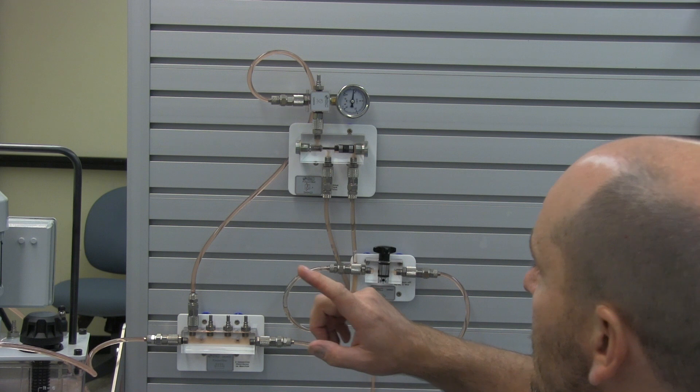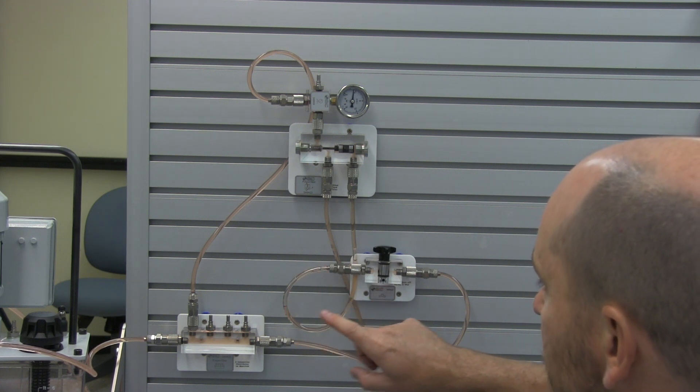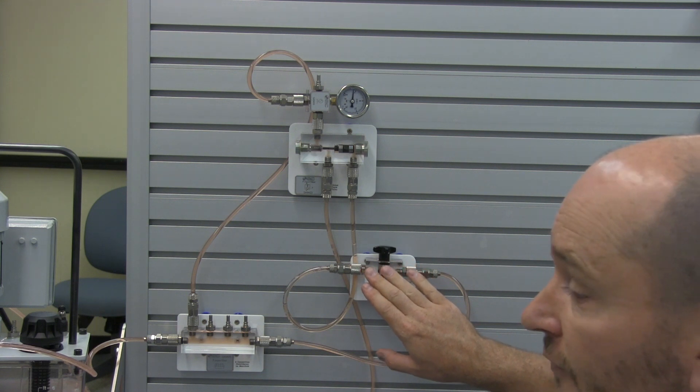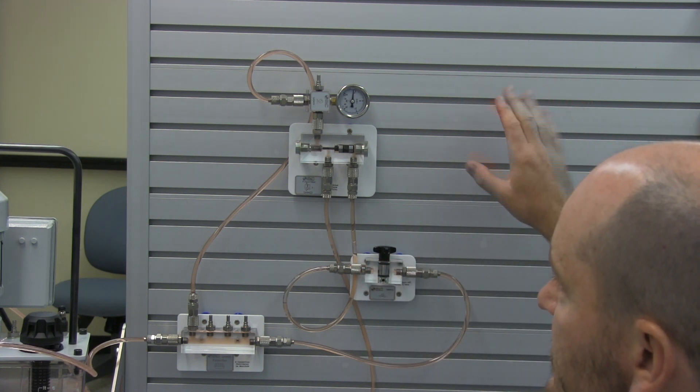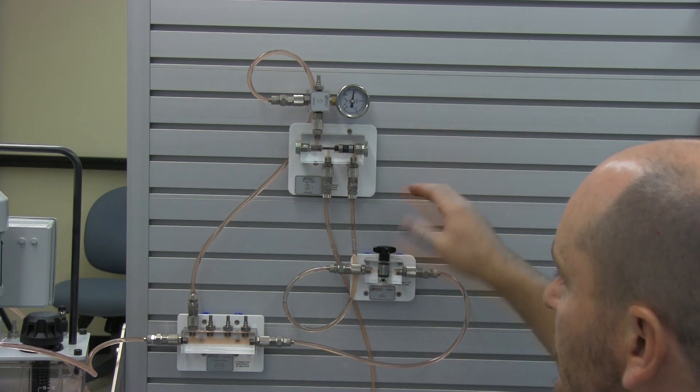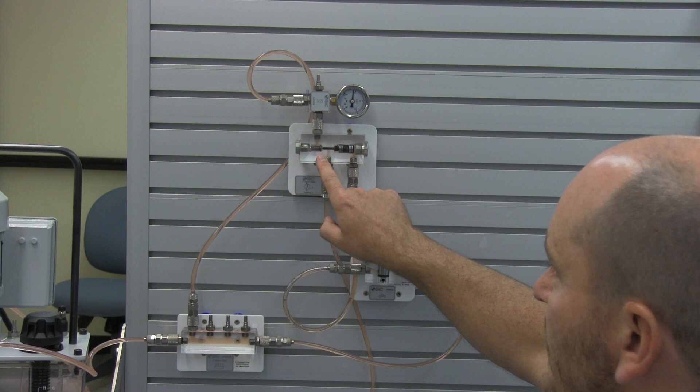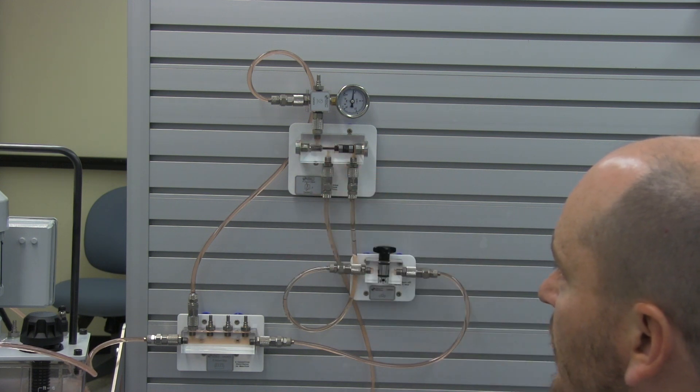Usually what you will see is this signal coming from a pilot signal teed off somewhere else in the system, letting you know you have enough pressure. But in this case I'm just demonstrating that by sending this signal here, where there's no flow, it's just pressure opening this up, allowing flow to go down this way.